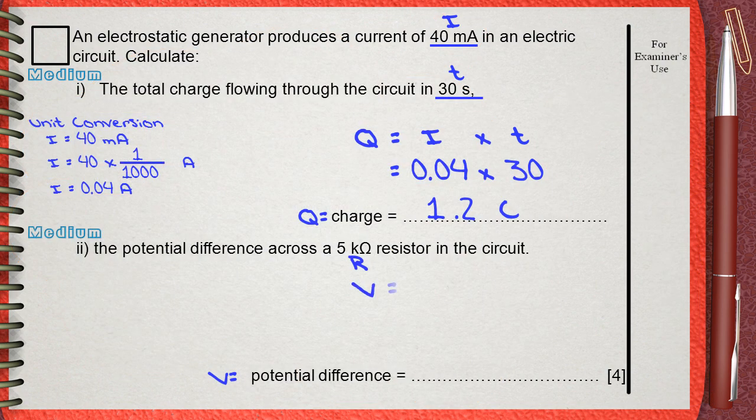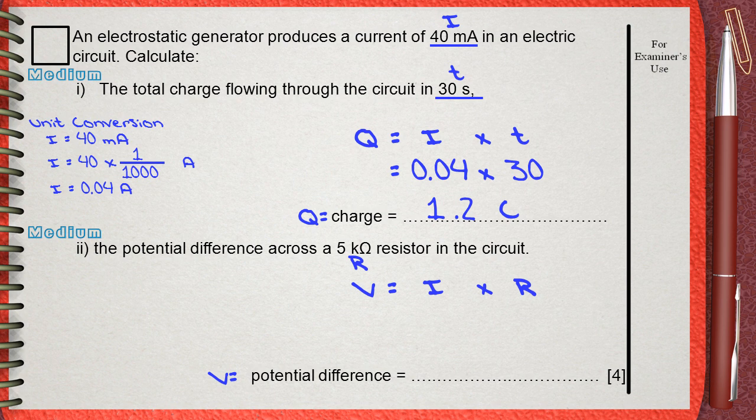I think the best equation is V equals IR. Again, there is another unit conversion. R here is 5 kOhms. KOhms is not a standard unit. The standard unit for resistance is Ohms. So we need to convert 5 kOhms into Ohms. The word kilo means 1000. So 5 kOhms means 5 times 1000 Ohm equals 5000 Ohms.